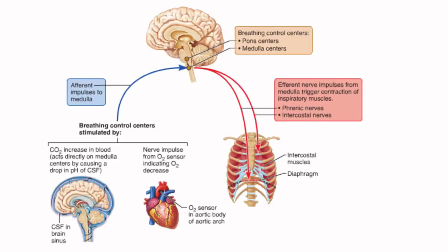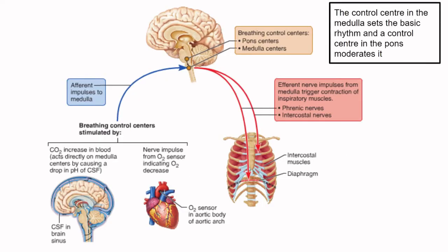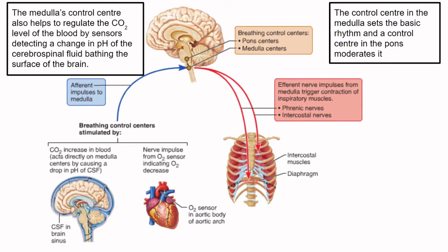The medulla's breathing control center monitors CO2 levels in the blood and regulates breathing activity appropriately. Its main cues about CO2 concentration come from slight changes in pH of the cerebrospinal fluid bathing the brain. When carbon dioxide reacts with water to form carbonic acid, it lowers the pH of the fluid. So when the medulla registers a slight drop in pH — and therefore an increase in CO2 — it increases the depth and rate of breathing, allowing the excess CO2 to be eliminated through exhalation.